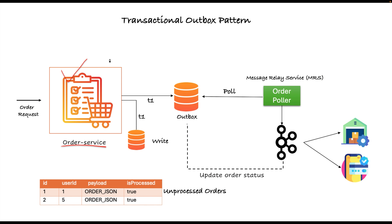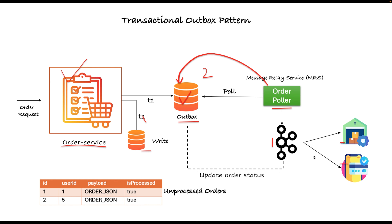We are done with the order service — we successfully write records to the order table and outbox table in a single transaction. Now we need to create the order puller service, which will pull unprocessed records from the outbox table at a set time interval (e.g., every two to three minutes) and publish them through Kafka so consumers can use them.